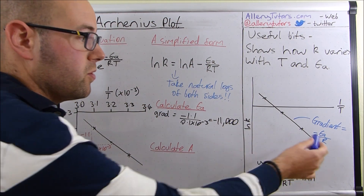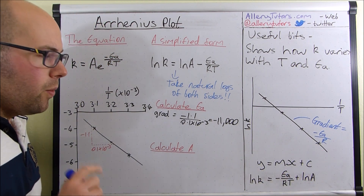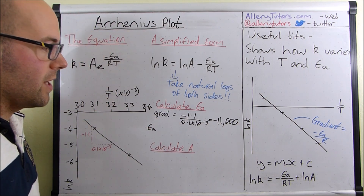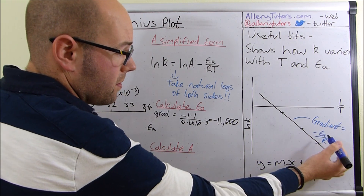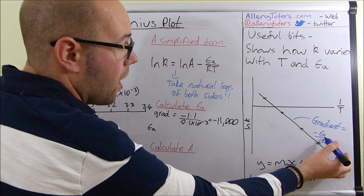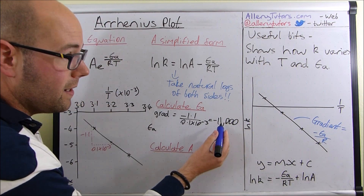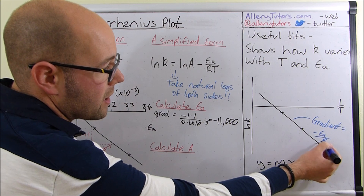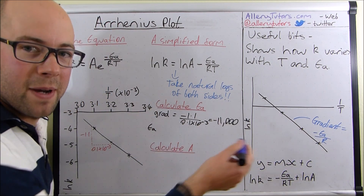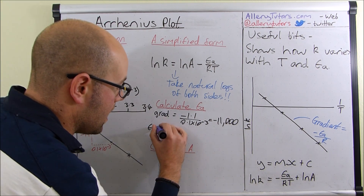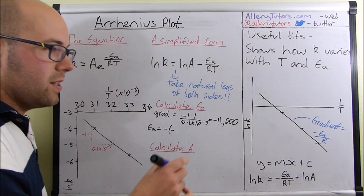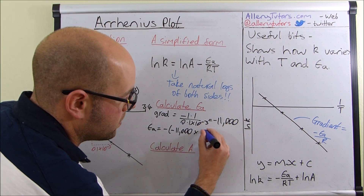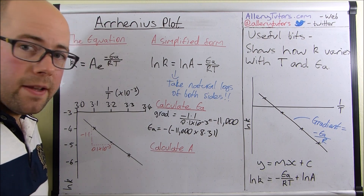This value of minus 11,000 is the gradient, which equals minus EA over R. We just want to work out activation energy, so we need to rearrange this equation. Activation energy EA is going to be R, the gas constant, times by this gradient value. Since we've got minus EA on one side, we're going to do minus times minus on the right hand side — so EA equals minus times minus 11,000.